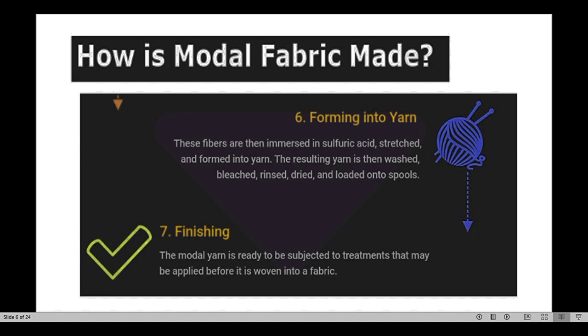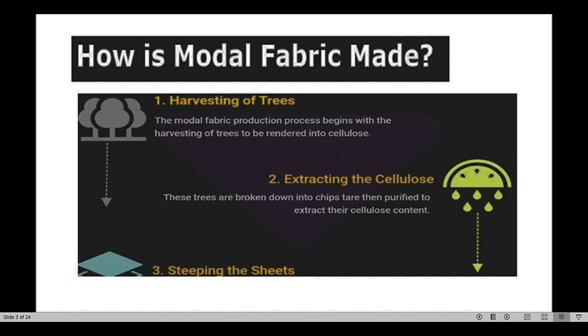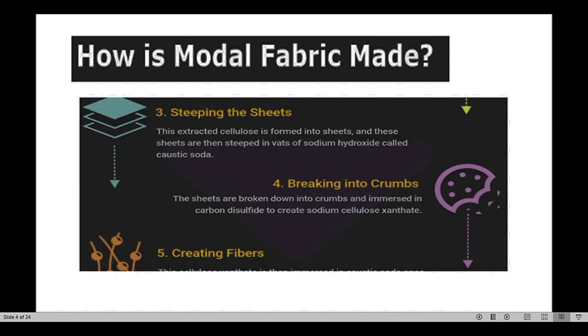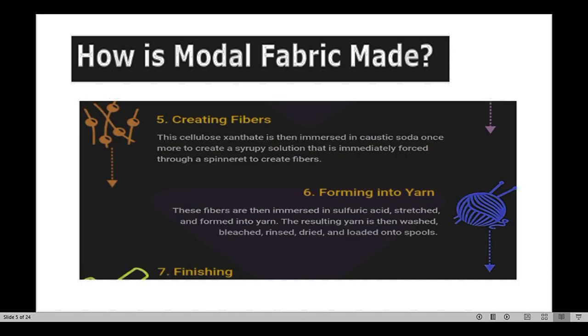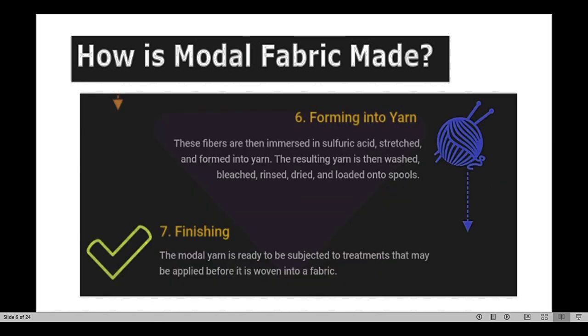The seventh and final step is finishing. The Modal yarn is ready to be subjected to treatments that may be applied before it is woven into fabric. To summarize, the seven steps are: (1) harvesting of trees, (2) extracting the cellulose, (3) stripping the sheets, (4) breaking into crumbs, (5) creating the fibers, (6) forming into yarn, and (7) finishing.